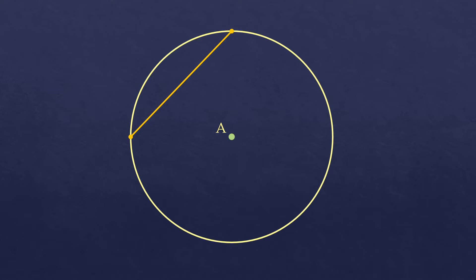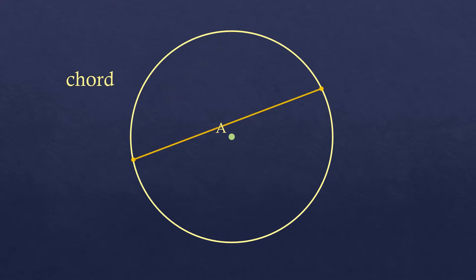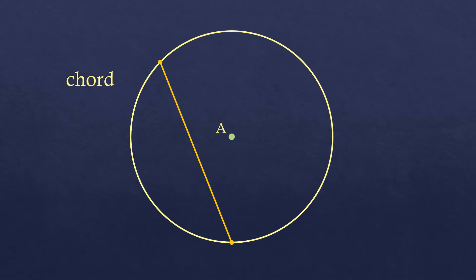Let's create a segment with endpoints that lie on the circle. This segment is what you call the chord. If you transfer the segment to another point that lies on the circle, it's still a chord. As long as both endpoints lie on the circle, it is called a chord.